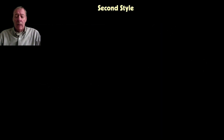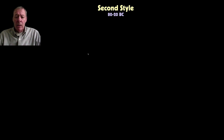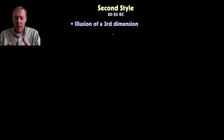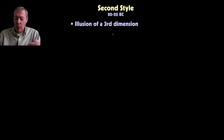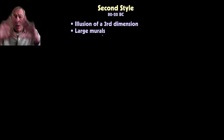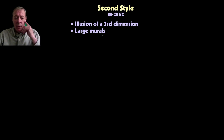The second style was popular from about 80 to 20 BC. When new styles emerged, old styles didn't disappear but were integrated. The second style features the illusion of a third dimension—it does not emphasize the presence of the wall but tries to disguise it, making it look like there is a greater space beyond. These paintings typically feature large murals, since the idea was to make the wall disappear and suggest you're looking out past it into a garden or similar outdoor space.